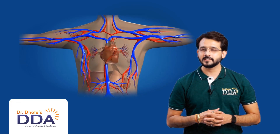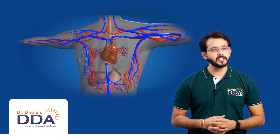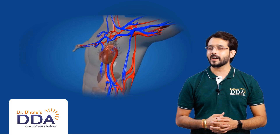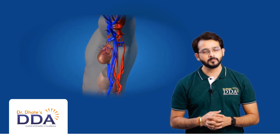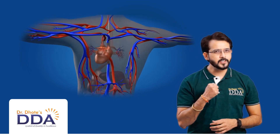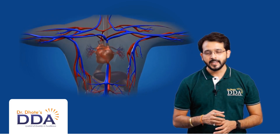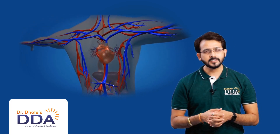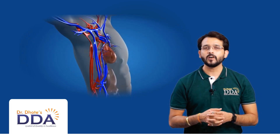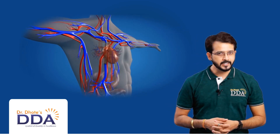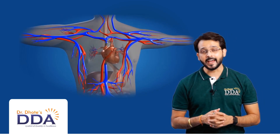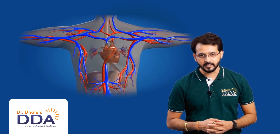The human heart is a centralized blood-pumping organ of the body, made of cardiac muscles. It is not much larger than your fist. It beats 72 times in a minute, 1 lakh times in a day, and 35 million times in a year.